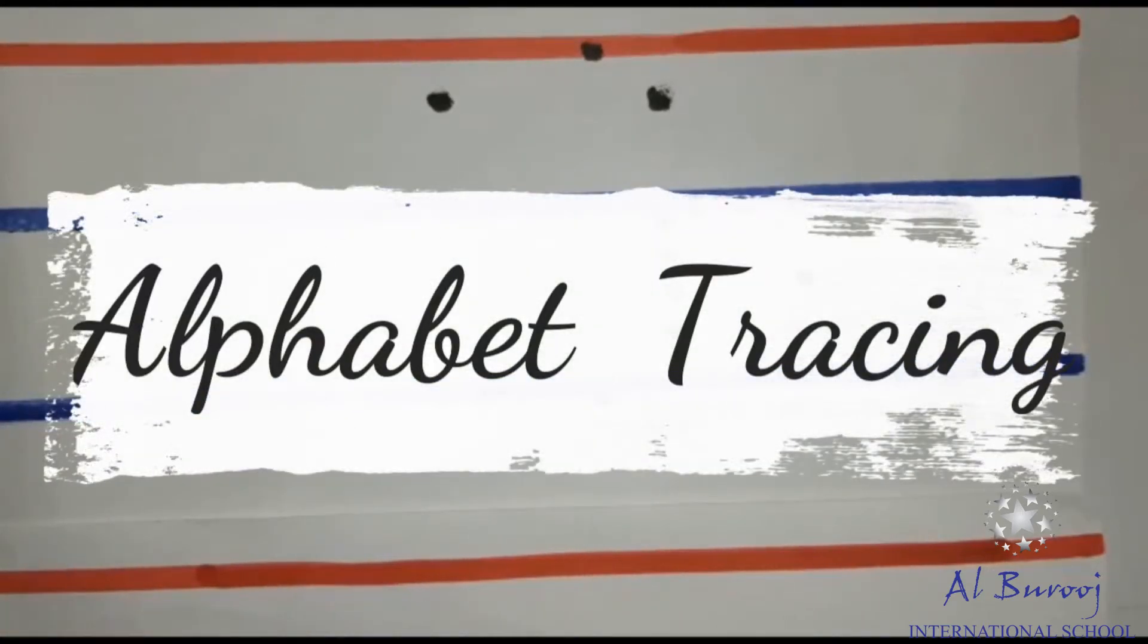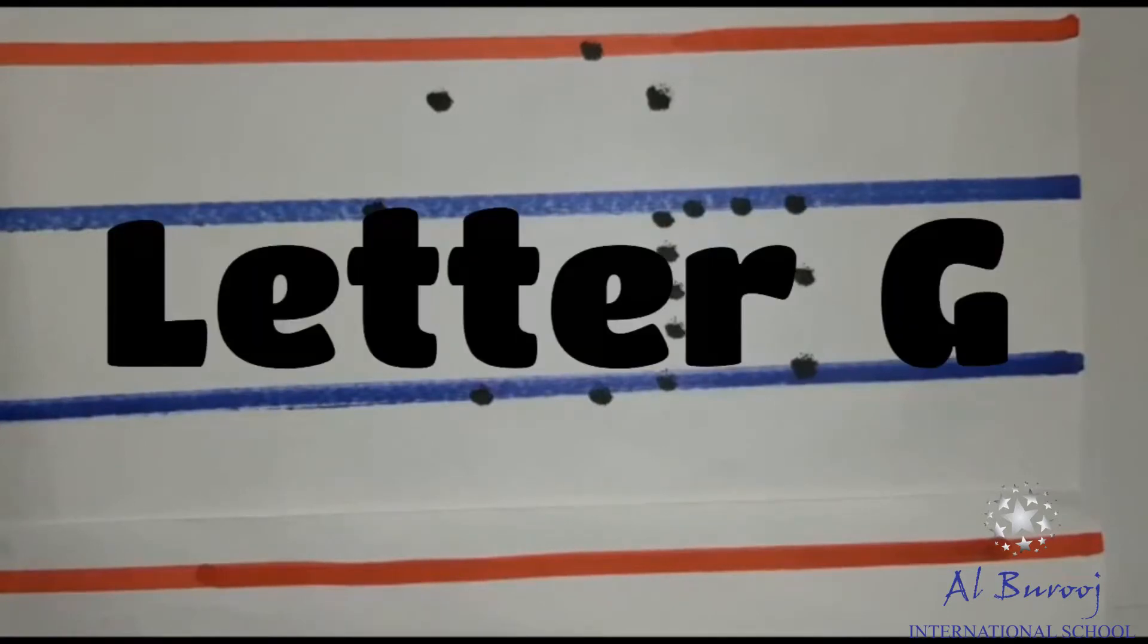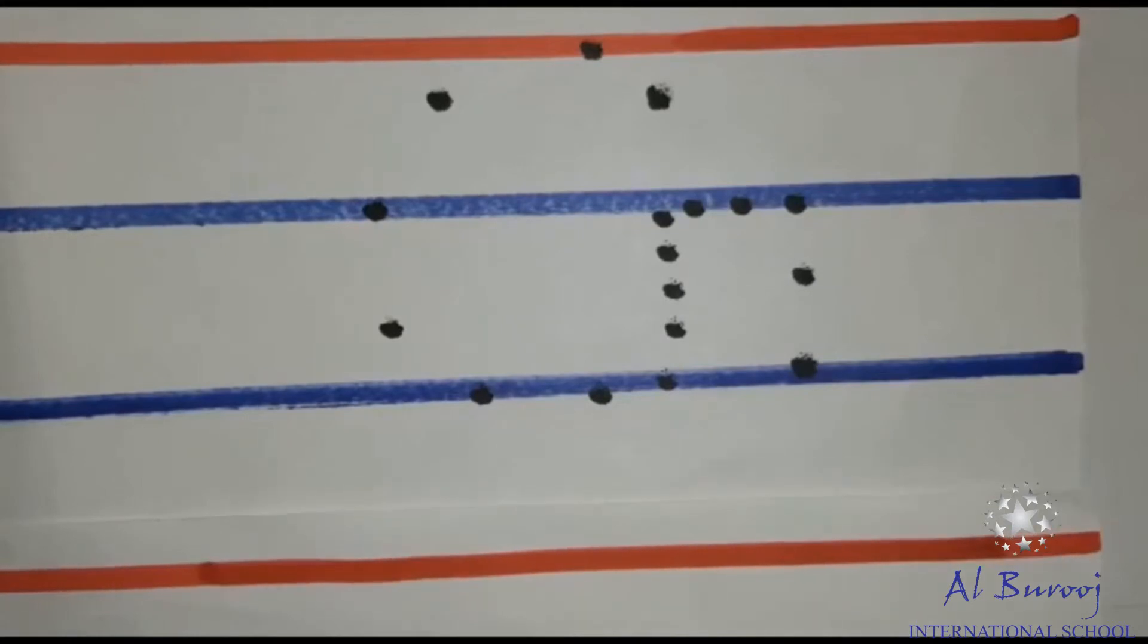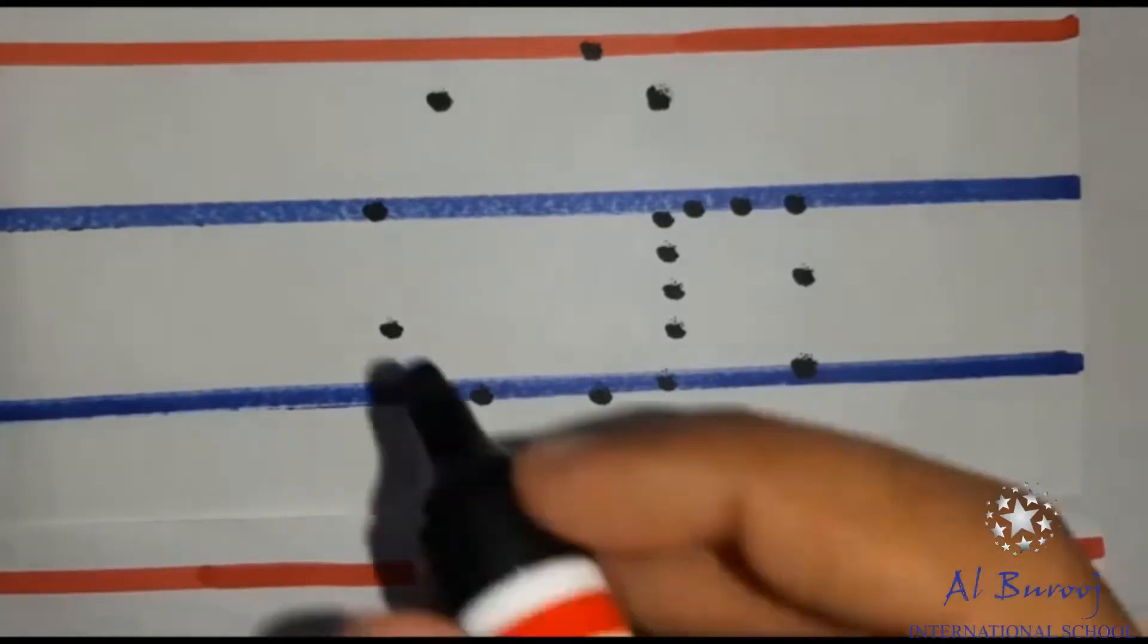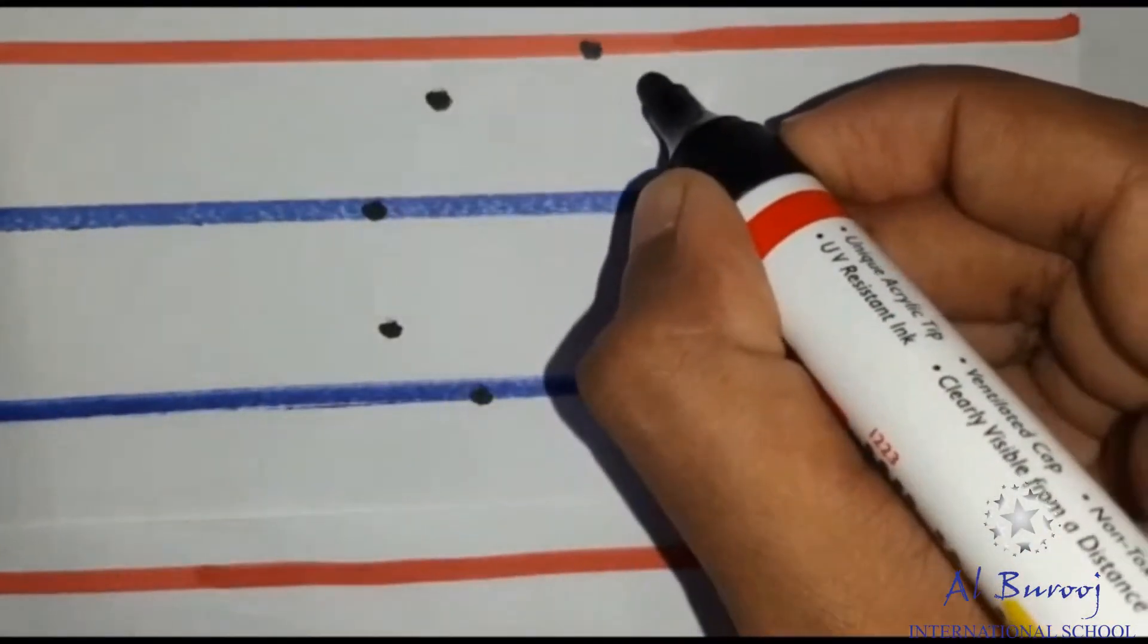Today, let us continue how to trace the alphabets. Now, let's learn how to trace the letter G. Start joining the dots in the form of a left curve from the first line till the third line.